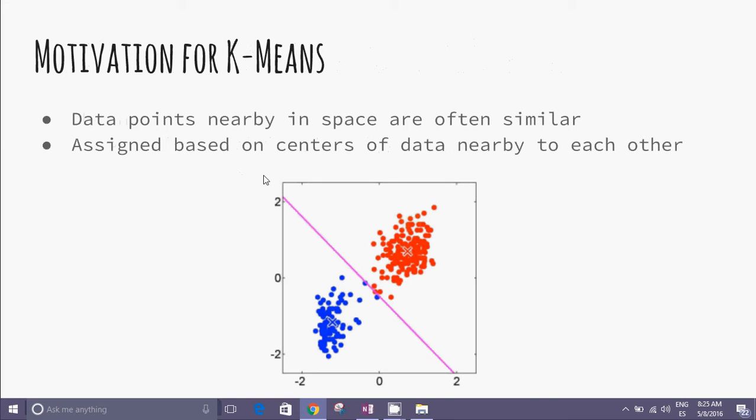Motivation for K-means: Data points nearby in space are often similar and can be assigned based on centers of data neighboring to each other. We can imagine two samples and two centers here and here.